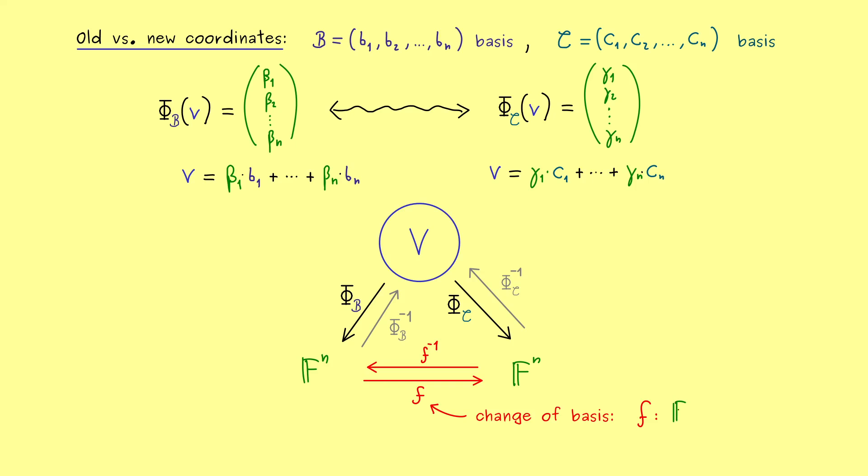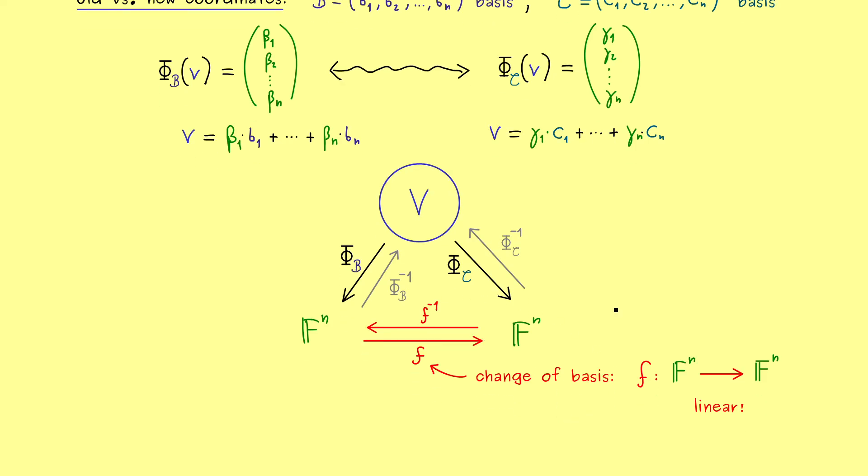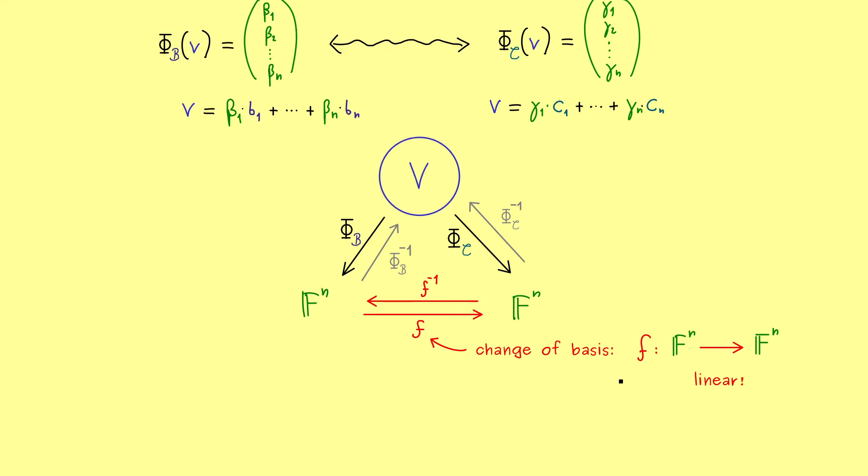Indeed we already know this map f we call the change of basis. And obviously it has to be a linear map. So it's a linear map from F^n to F^n and it's also bijective.